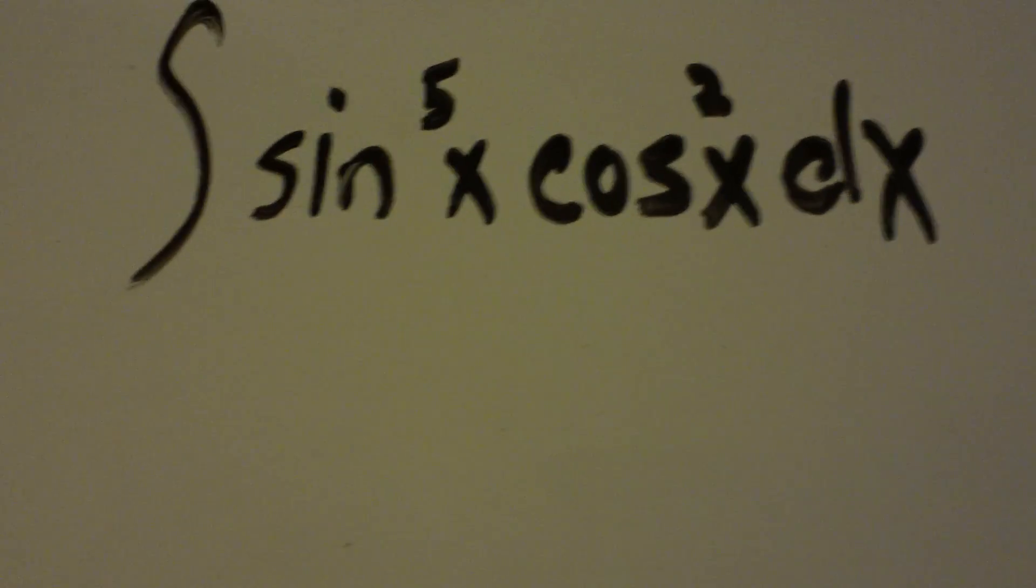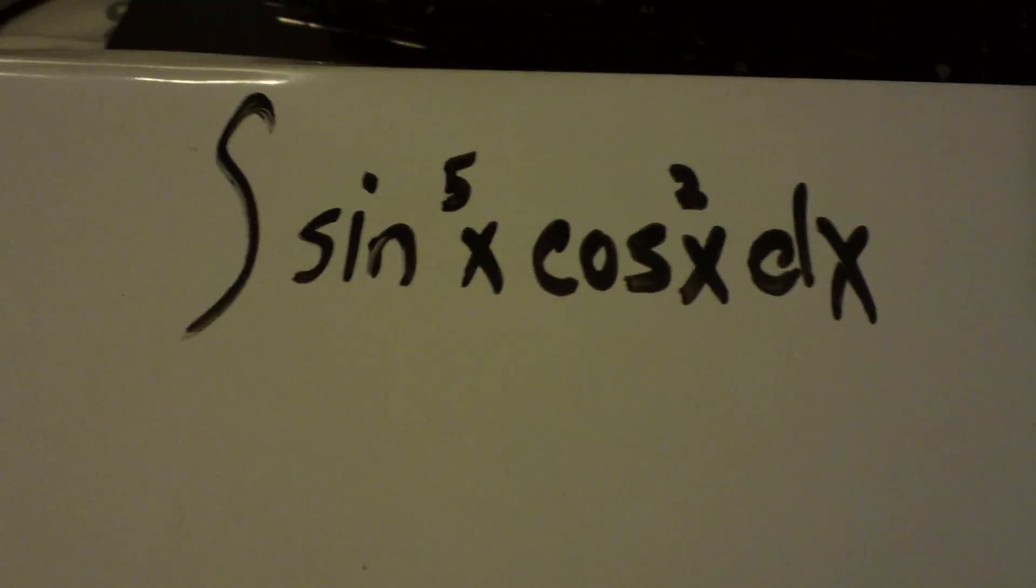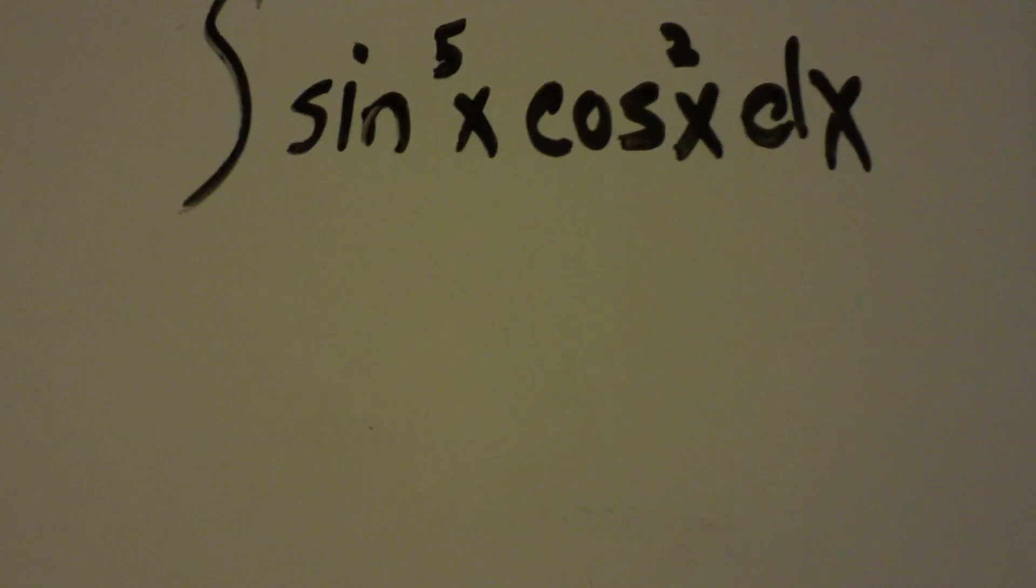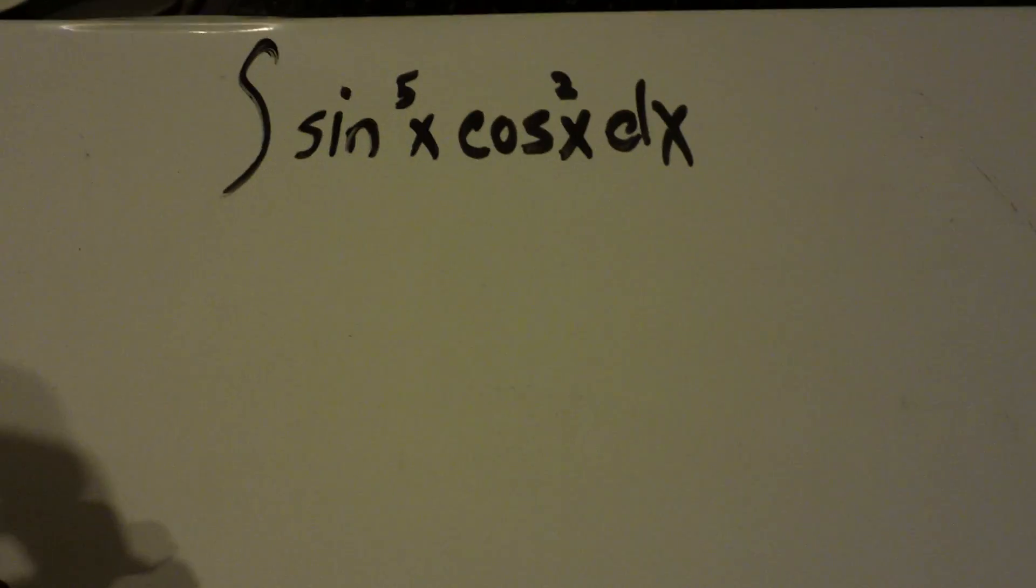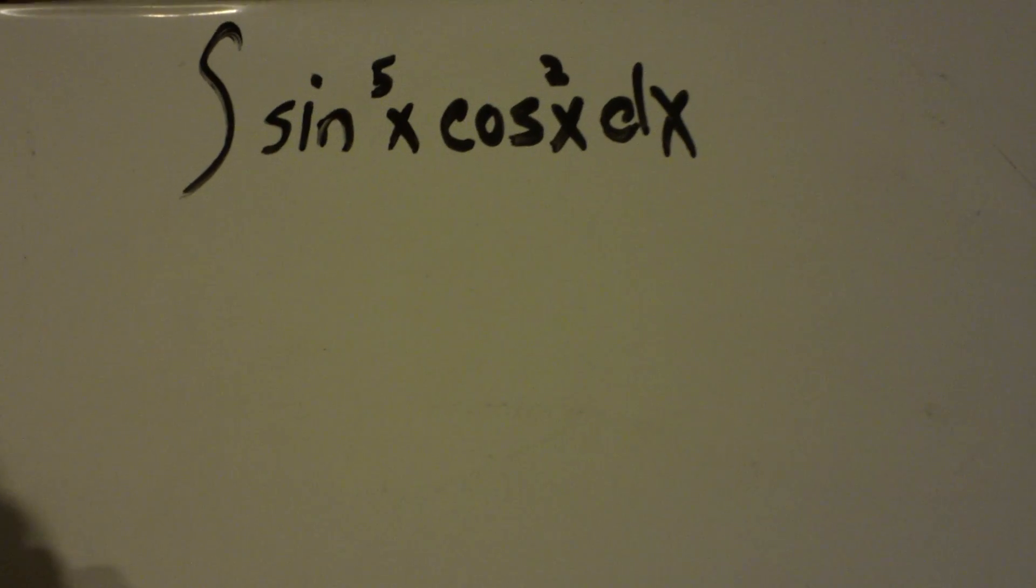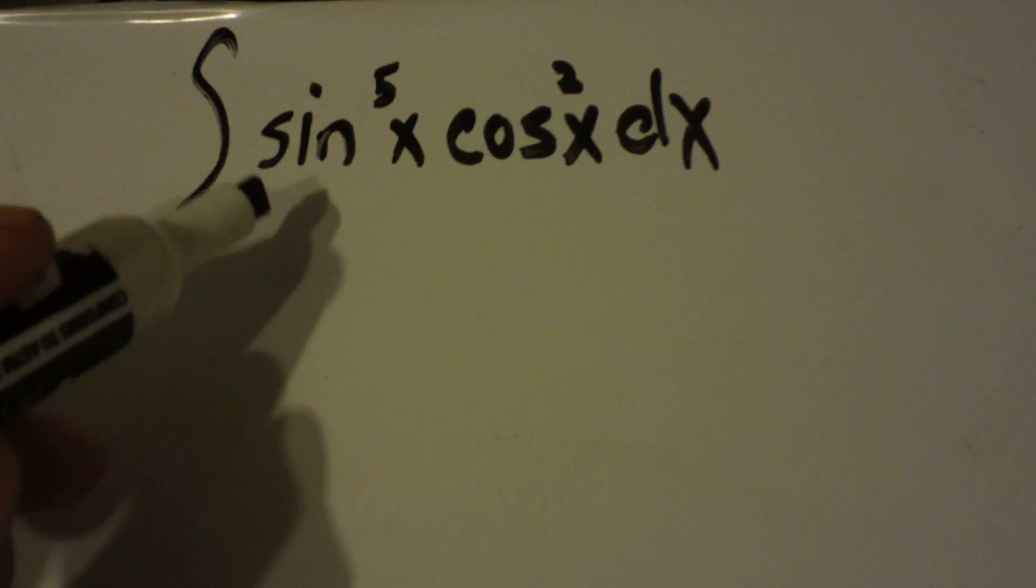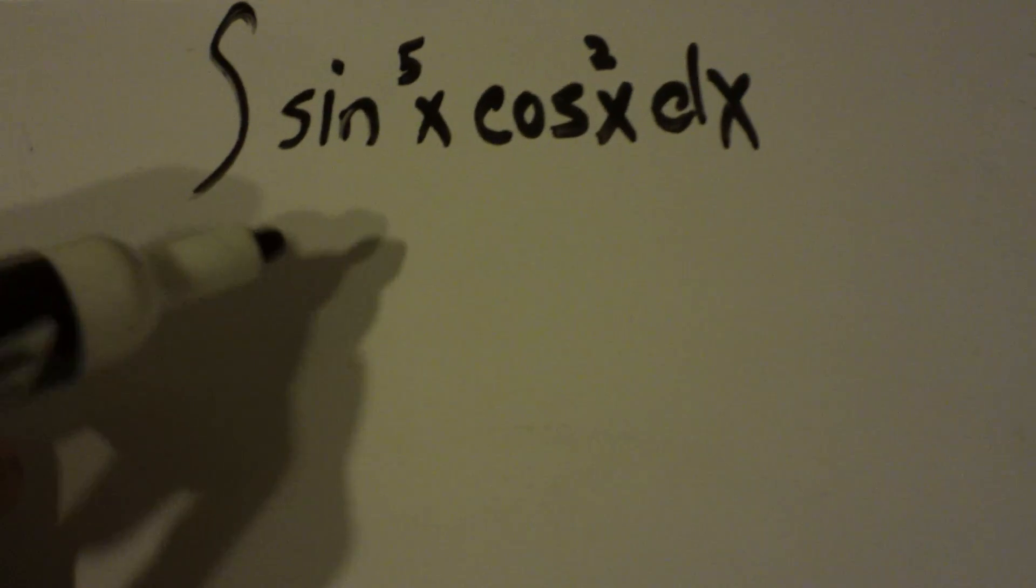Hey guys, I just want to walk you through this trig integration problem, take you step by step through it by using U substitution. And the first thing you want to do is split this sine to the fifth up to sine to the fourth times sine, and I'll show you why in a second.